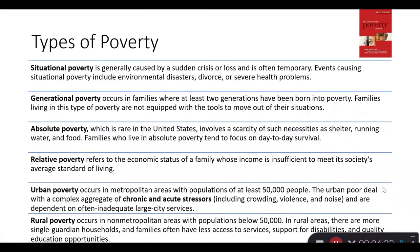Generational poverty occurs in families where at least two generations have been born into poverty. Families living in this type of poverty are not equipped with the tools to move out of their situation. It is sort of poverty that is handed down from previous generations, and it's probably more debilitating because previous generations didn't have the tools to move out, so they couldn't teach future generations how to do so either. Generational poverty is usually difficult to tackle.